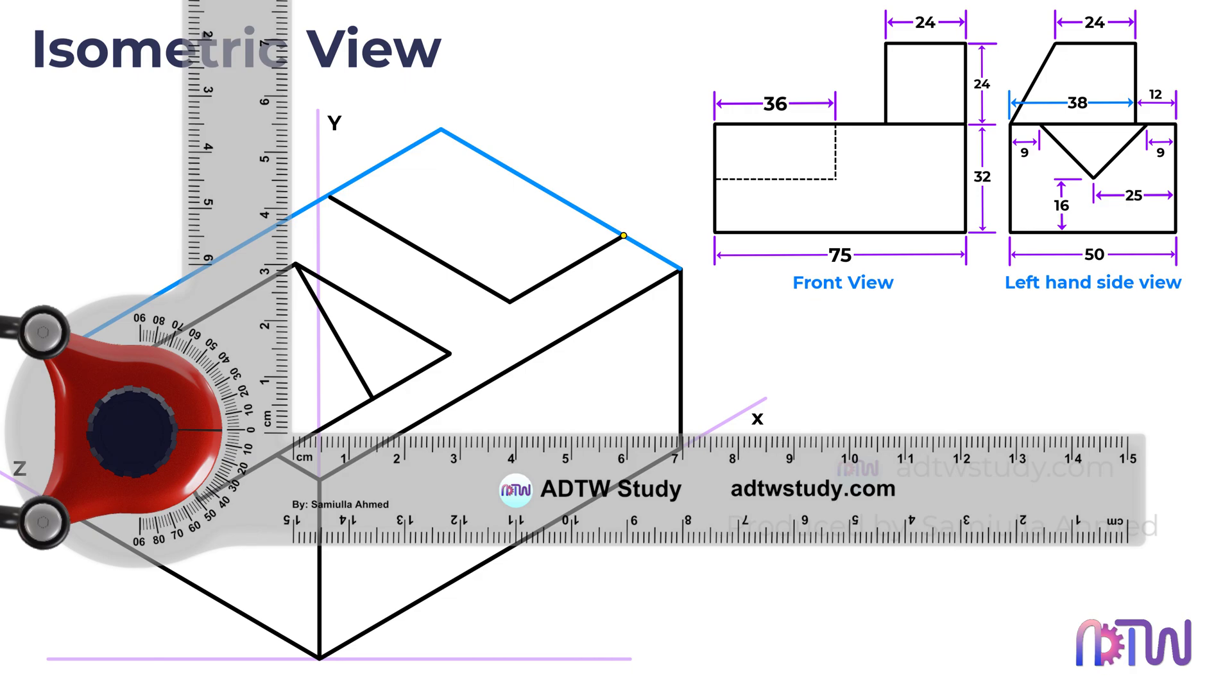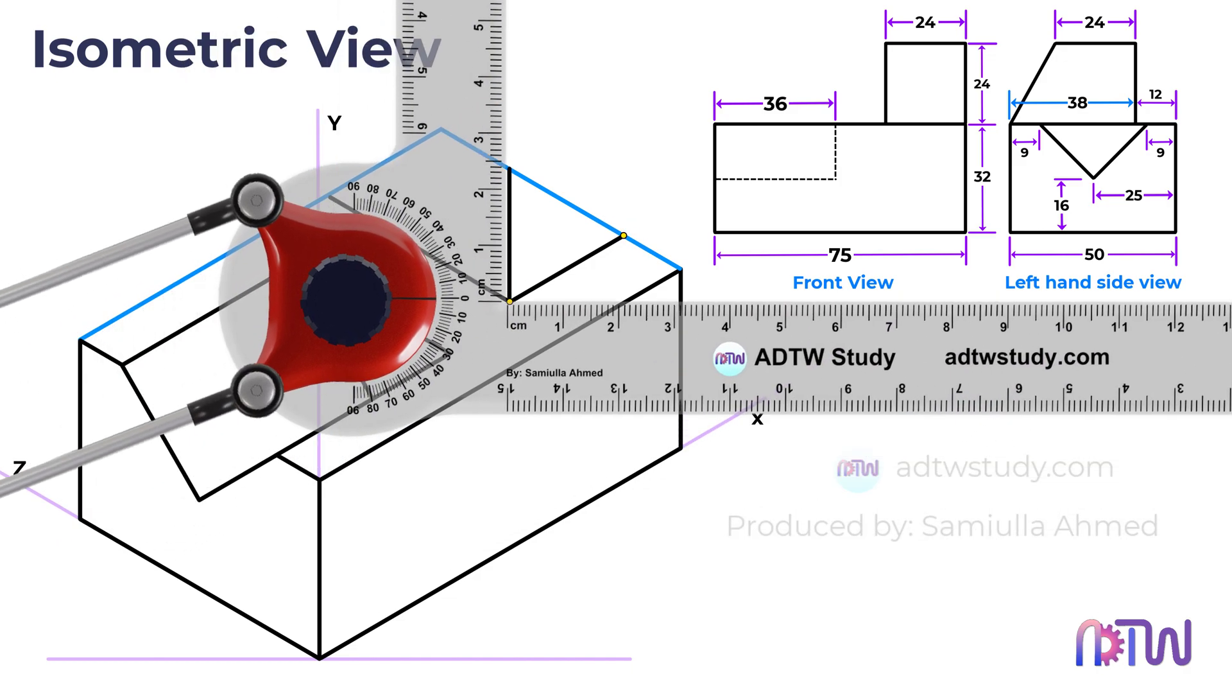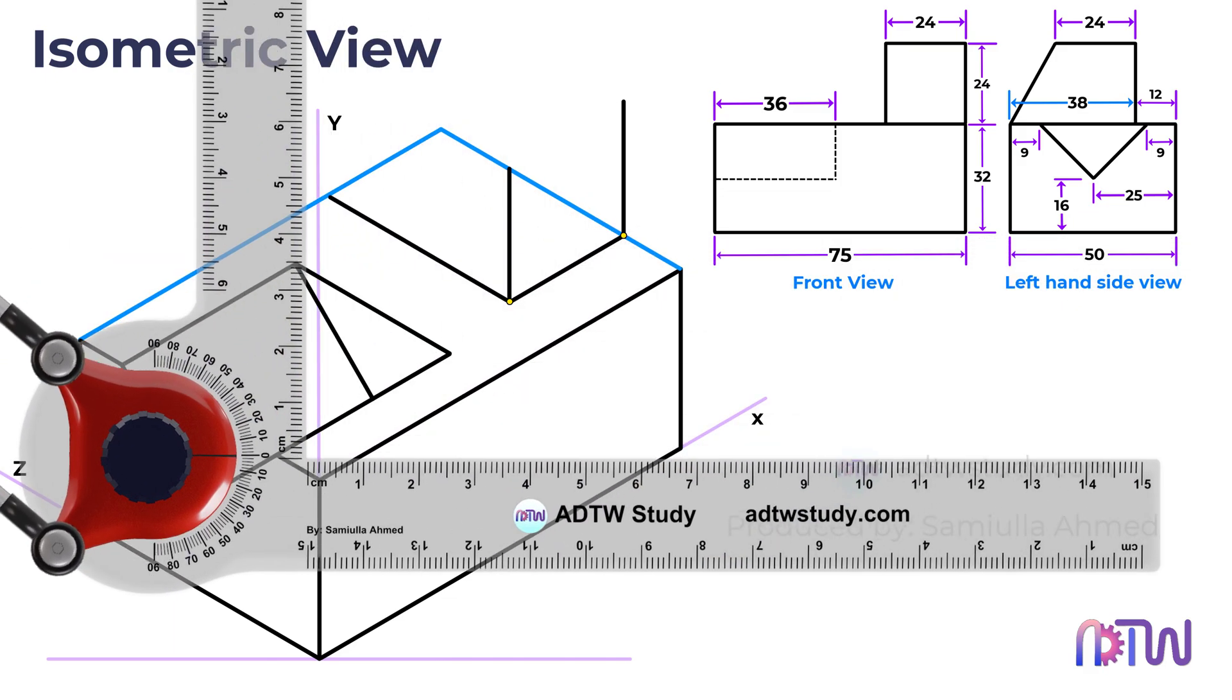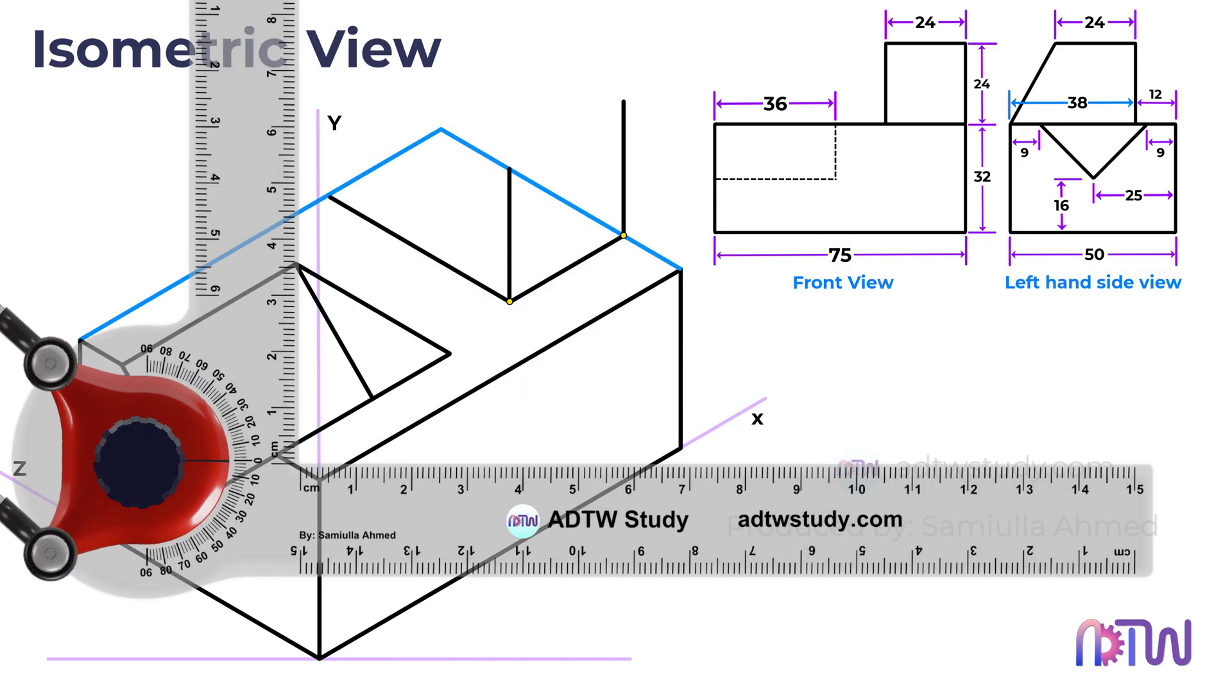Now, let's proceed with constructing the top portion itself. Considering the height of this top part is 24mm, draw vertical lines of 24mm from these two points. Join the endpoints of these lines to establish the vertical side of the upper portion.